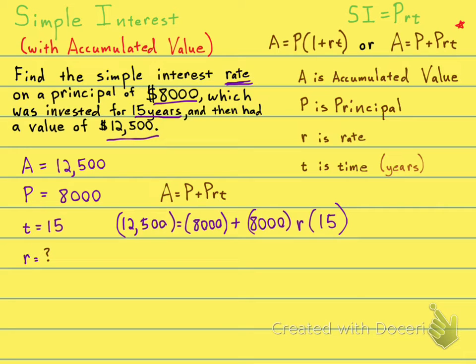And now we're going to, next step, we can either put these two numbers together, that 8,000 times 15, or we can move this 8,000 over to this side. Either one's fine. I'm going to go ahead and put these two together. Let's do 8,000 times 15. Get my calculator. 8,000 times 15 gives me 120,000. So we have 12,500 equals 8,000 plus 120,000 times R.